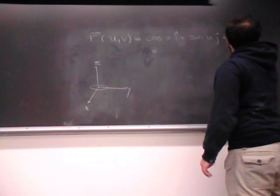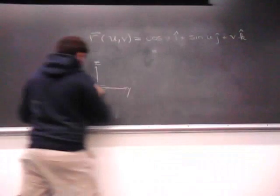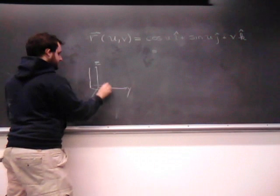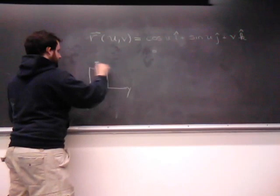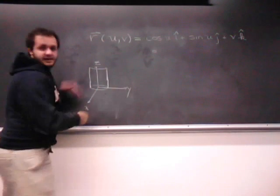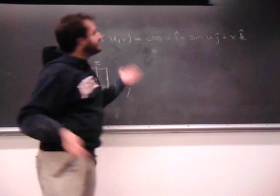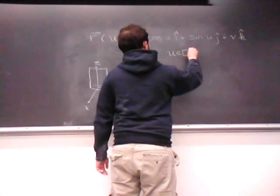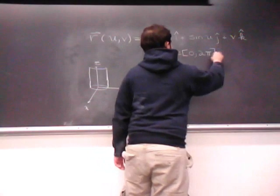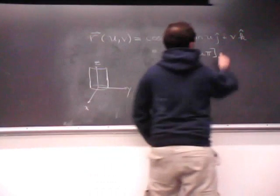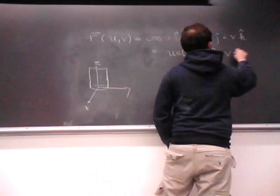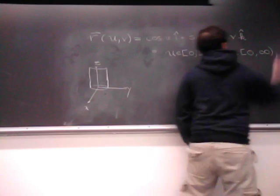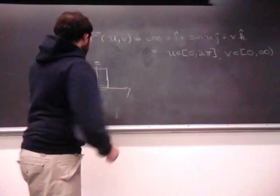So, v k. And, now we can stack these things on top of each other. And, it also goes in the other direction. Let's just take, for example, u goes from 0 to 2 pi. And, v goes from 0 to infinity. Okay.